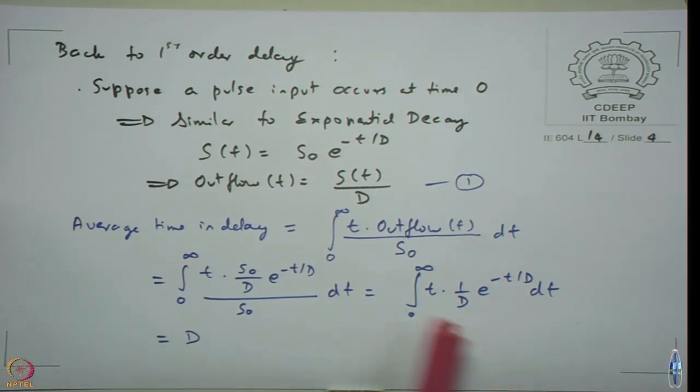This equation is nothing but, if you just look at this, 1 by D into e power minus t by D is nothing but exponential distribution. Mean of exponential distribution is 1 over its parameter. So 1 by 1 by D, which is D. If you can spot it early, all your probability distributions will come into play here. Here we are assuming that the outflow is exponentially distributed with the mean time. If you want to capture it you do it in first order delay.